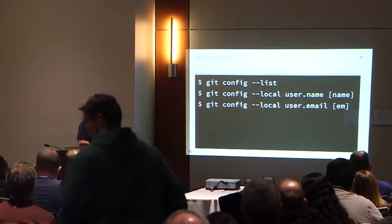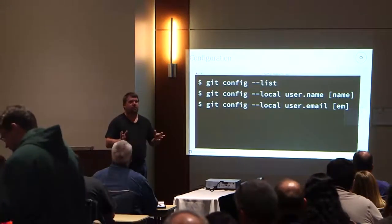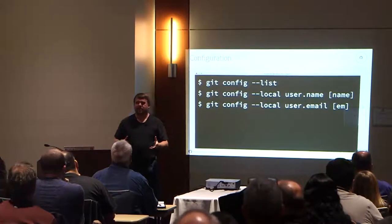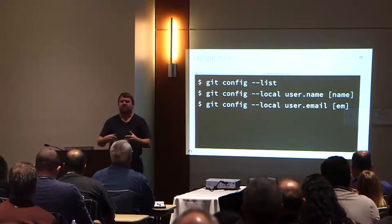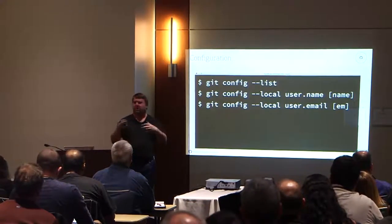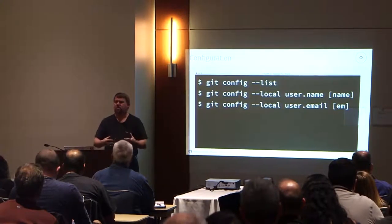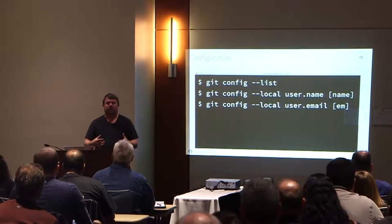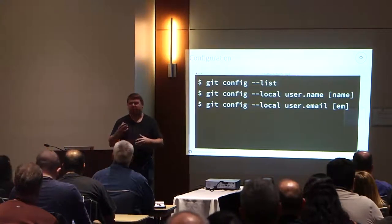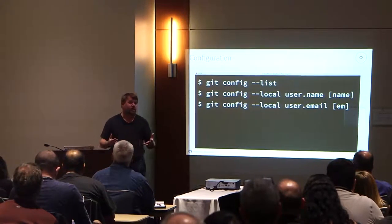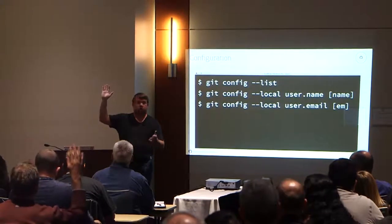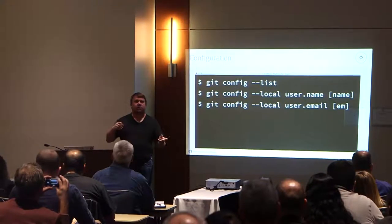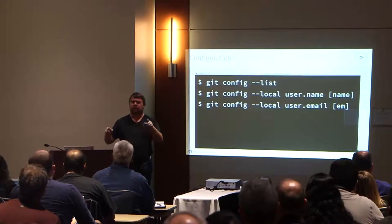Once you have Git installed, the most confusing part is that because you're doing things locally, if you're in SVN, CVS, or ClearCase and doing commits, the system knows who you are on your machine. Well, Git doesn't know who you are, and there are actually many different ways to configure your identity. How many people here contribute to an open source project?